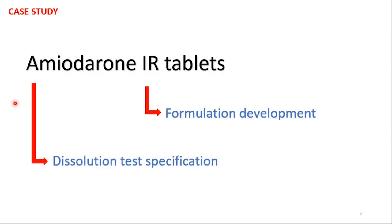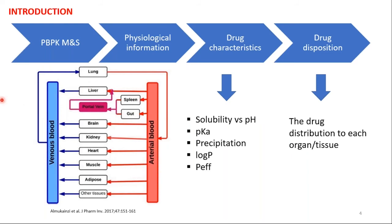In our case study, we are going to show the application of PBPK modeling and simulation in the formulation development and setting dissolution test specifications for Amiodarone IR tablets. As an introduction, PBPK — physiologically-based pharmacokinetic modeling — is a very important tool that integrates physiological information of human or animal with drug characteristics such as solubility versus pH, pKa, precipitation, log P, and permeability.